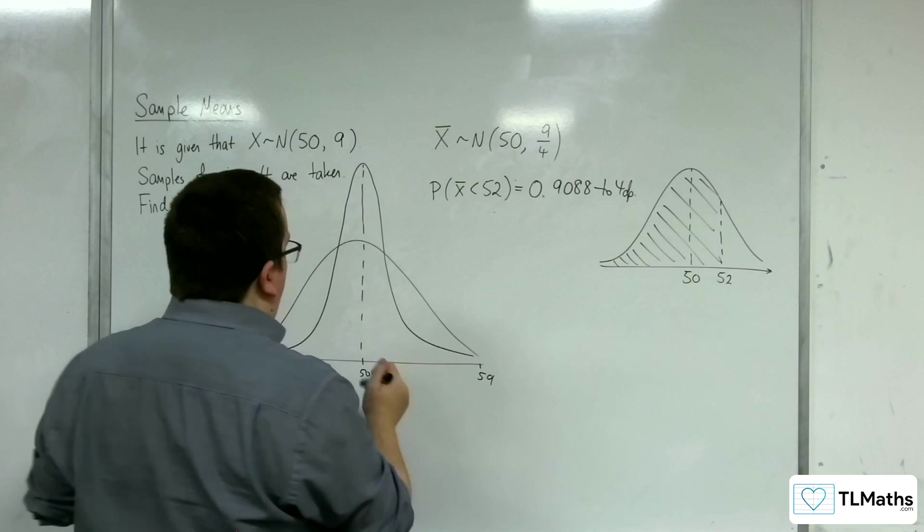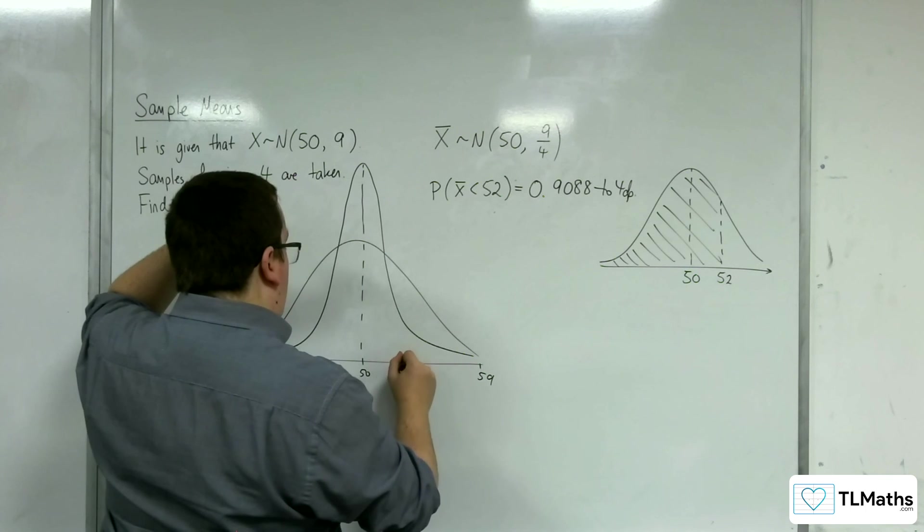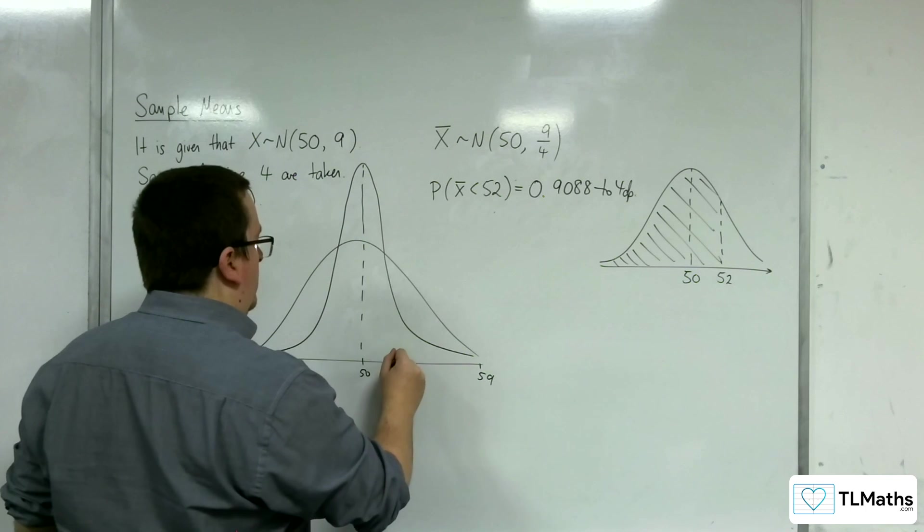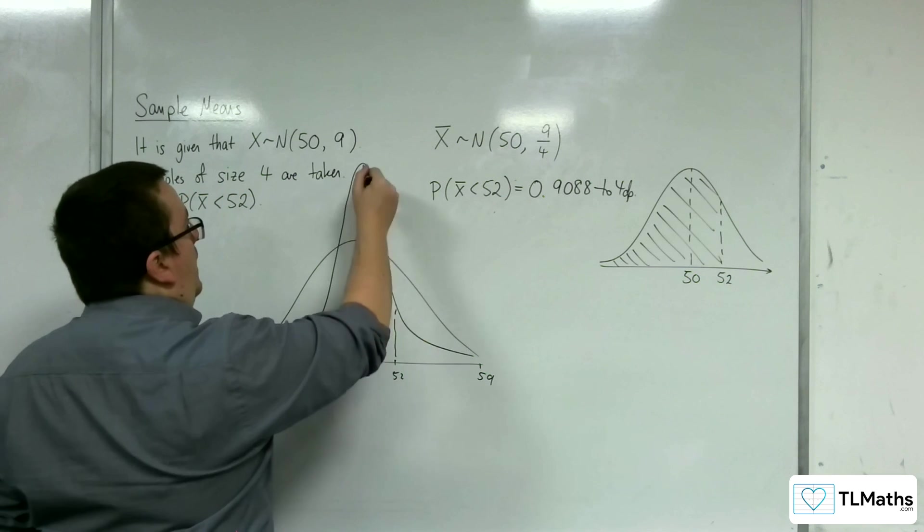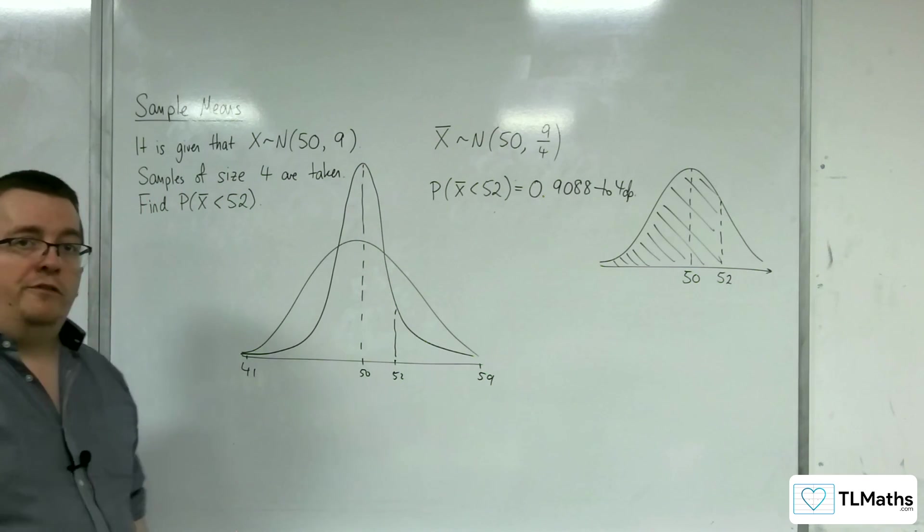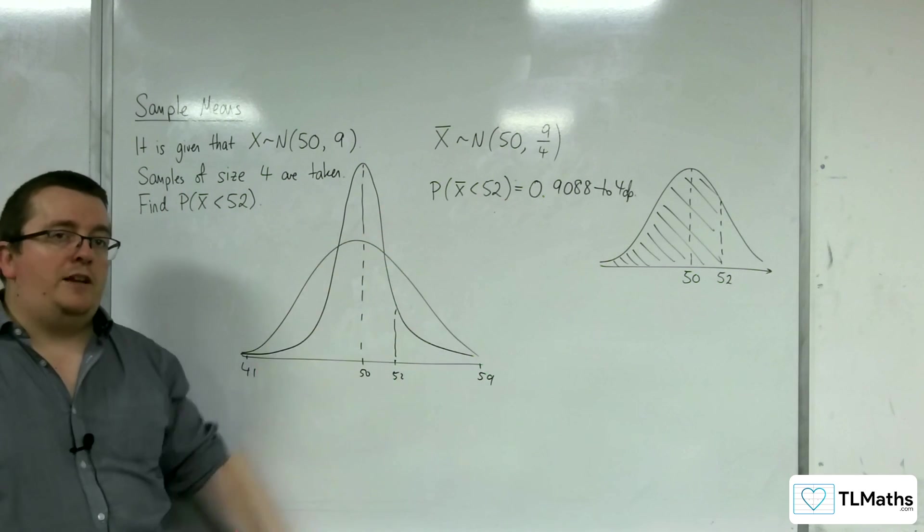So the likelihood of getting that 52, less than 52, is actually quite a large proportion of the curve. That's why that value should make sense.